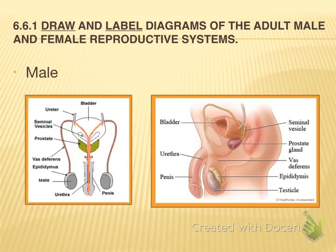Your first assessment statement asks you to draw and label diagrams of the adult male and female reproductive systems. These are probably some of your more difficult drawings, as they are very detailed.